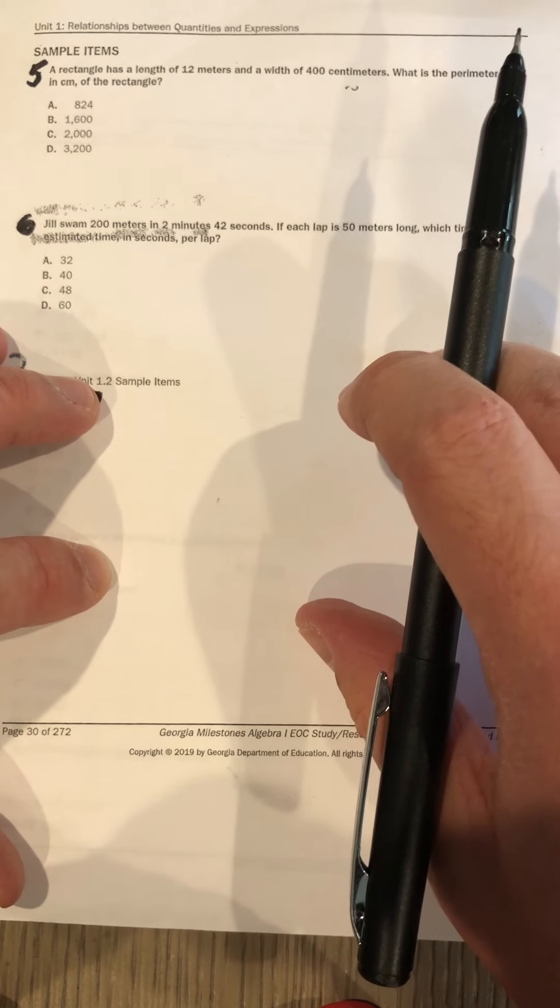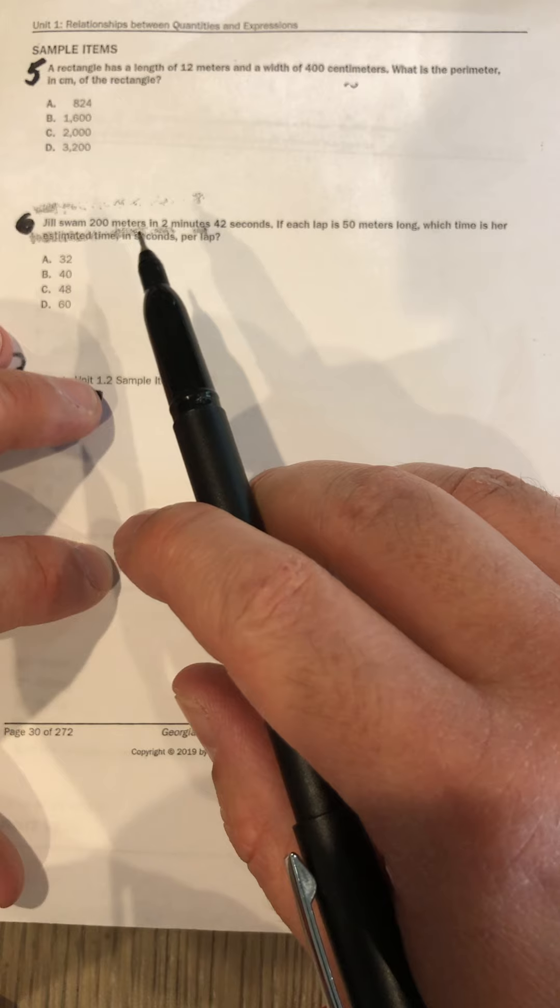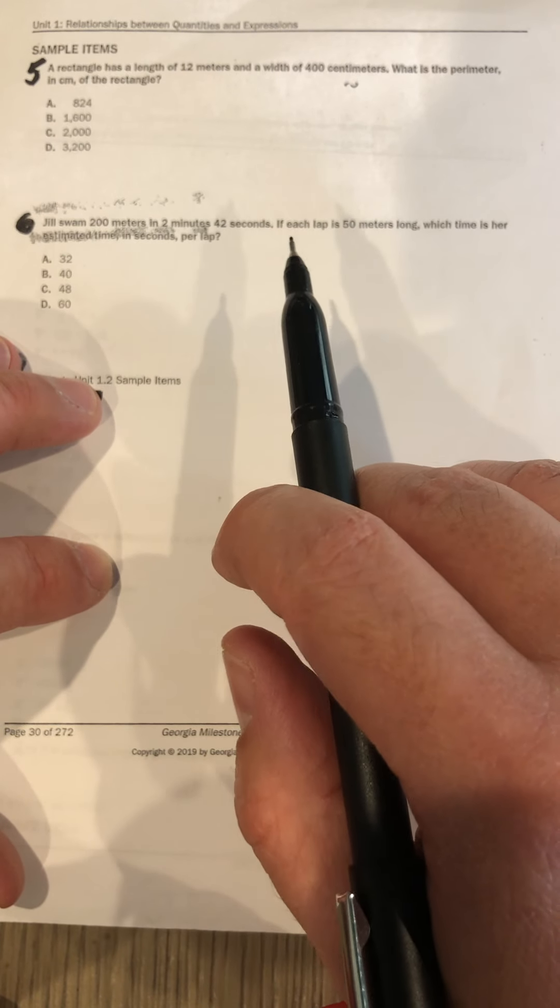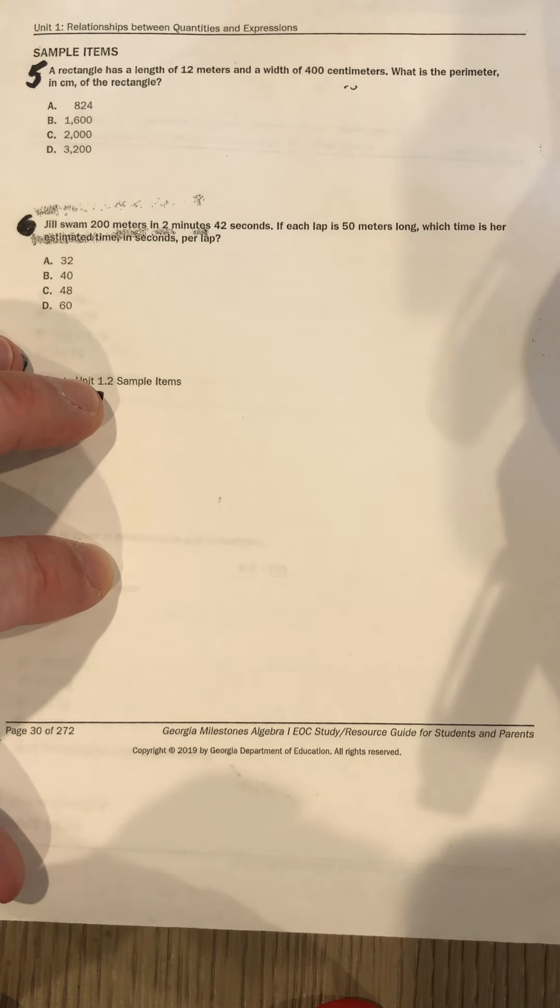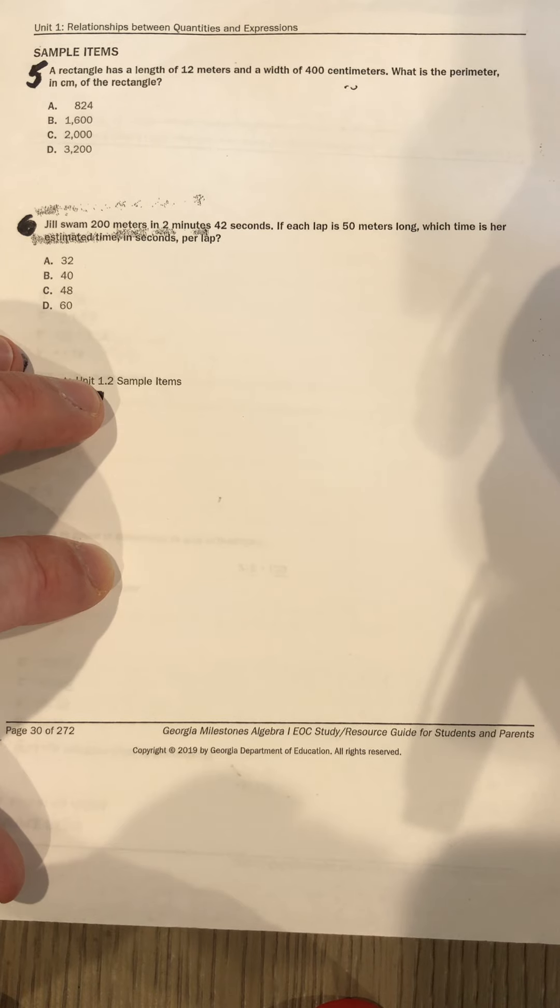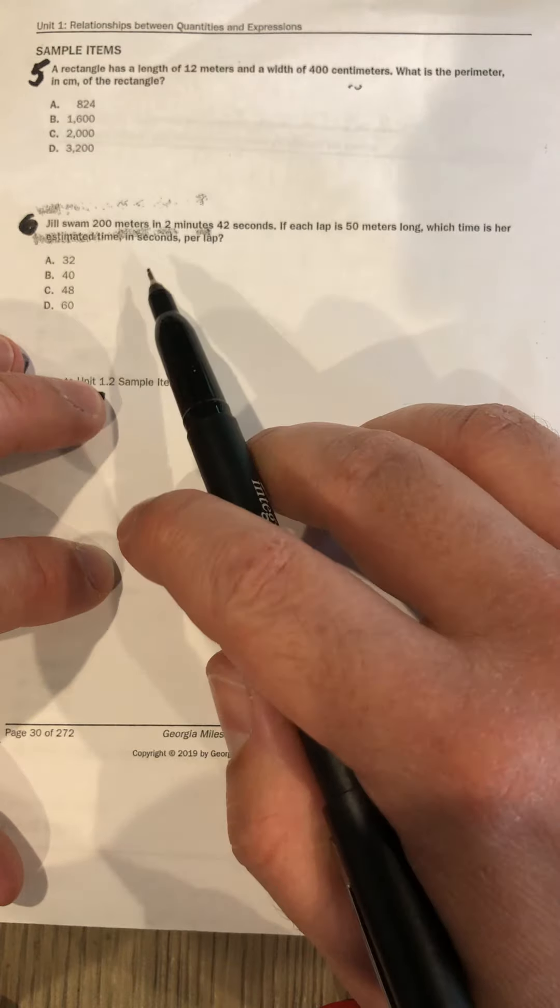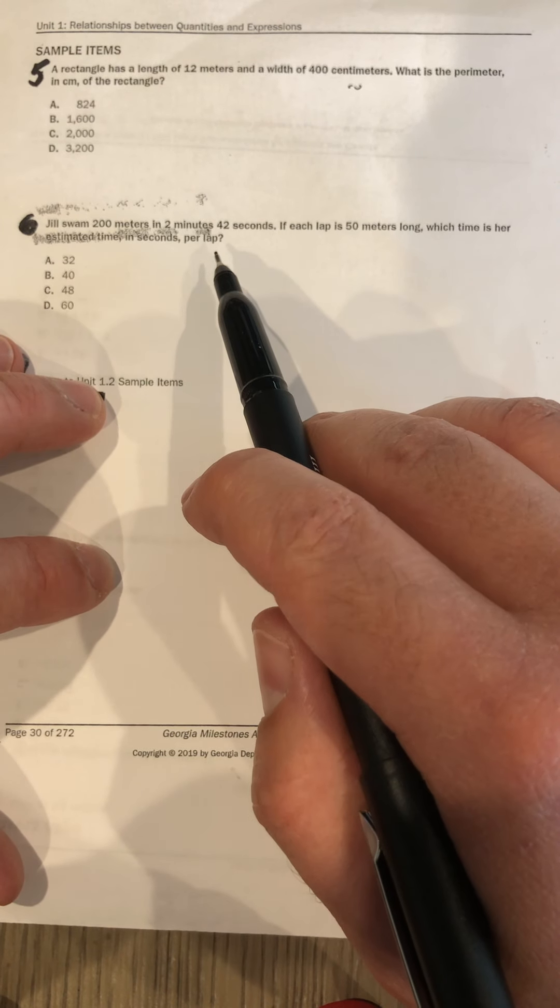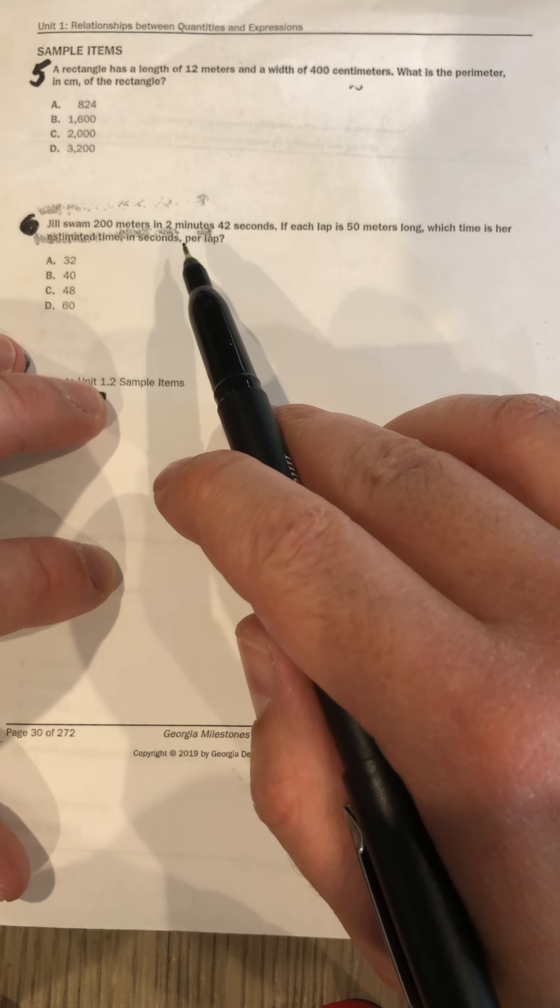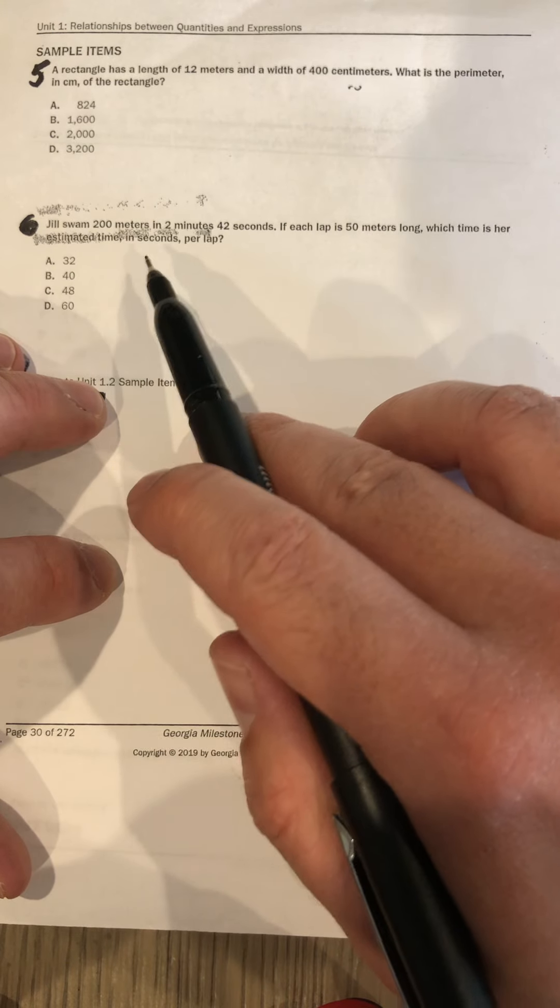Oh my god, okay. Jill swam 200 meters in two minutes and 42 seconds. If each lap is 50 meters long, which time is her estimated time in seconds per lap? Okay, so again, we're looking at estimated time in seconds per one lap. Okay, so we want to find out how many seconds it took her to do that. We've got two minutes and 42 seconds. What you want to do is you want to convert all this to seconds.